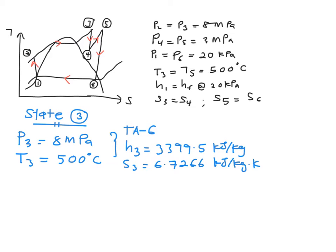Alright, now we move on to your state 4. So in your state 4, you have P4 equal to 3 MPa, and then your S4 is equal to your S3, which is 6.7266 kJ per kg·K.